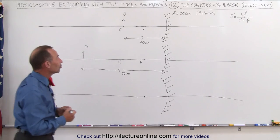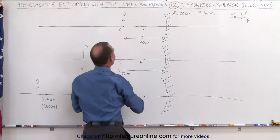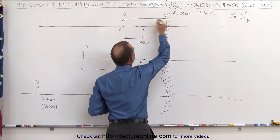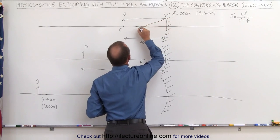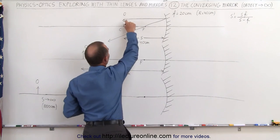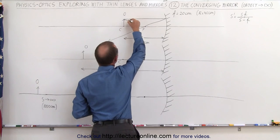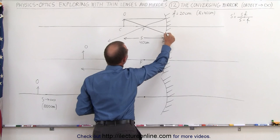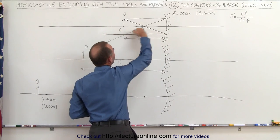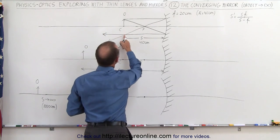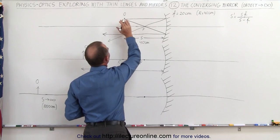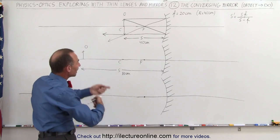The first case is when we place the object at the center of curvature. We draw a line straight to the mirror parallel to the optical axis. It reflects off the mirror and goes through the focal point. The second ray is drawn from the object through the focal point of the mirror. When it hits the mirror, it reflects and the reflected ray goes parallel to the optical axis. Where the two rays meet, that's where the image appears — at the exact same place as the object, except inverted.